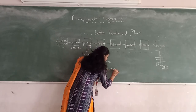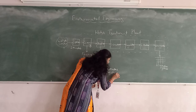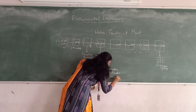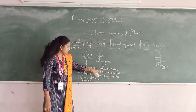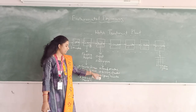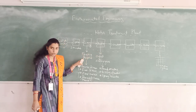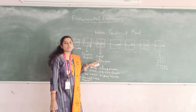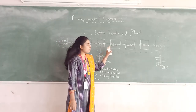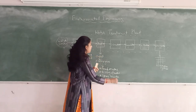In aeration, we have different types of aerators such as cascade aerators, spray nozzles, and others. These are the types of aerators used in the aeration process. So in the screening process we remove floating debris, and in the aeration process we remove odor and dissolved gases present in the water.